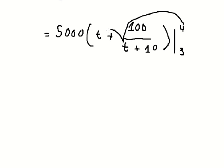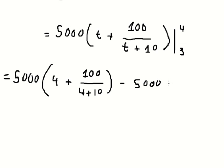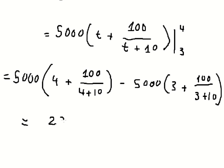So we put number four in here, number three in here. So we have it like this, and we get two thousand two hundred fifty-two point seven four. So this is approximately about two thousand two hundred fifty-three.